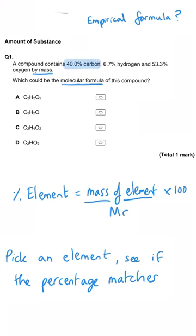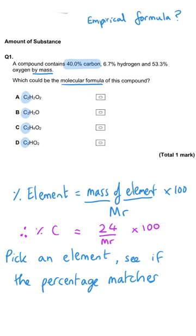I recommend carbon because A, it's a nice number, and B, there's the same number of carbons in each formula. So the two carbons in each of these formulae will have a mass of 24. We need to divide that by the total mass of each formula — the MR of each formula — multiply by 100, and that gives us the percentage of carbon in that particular formula.